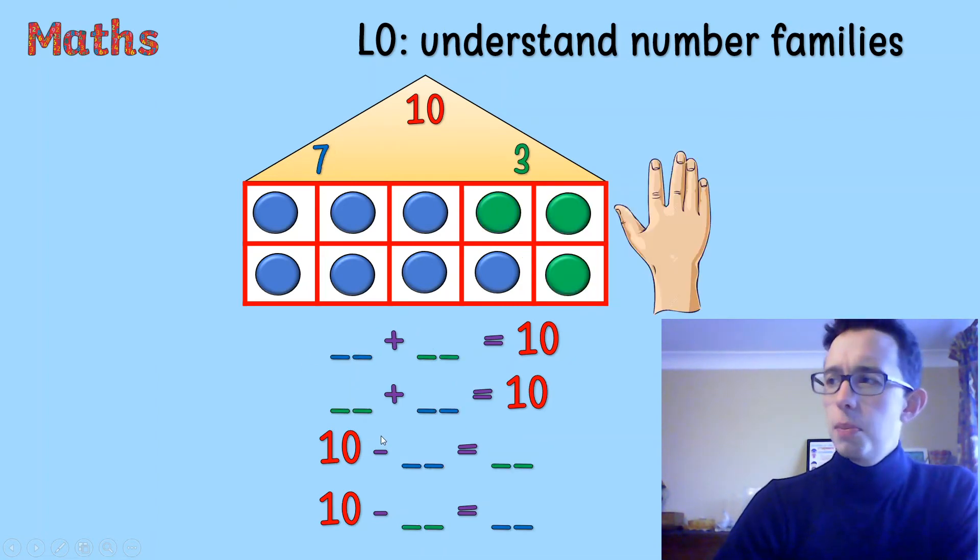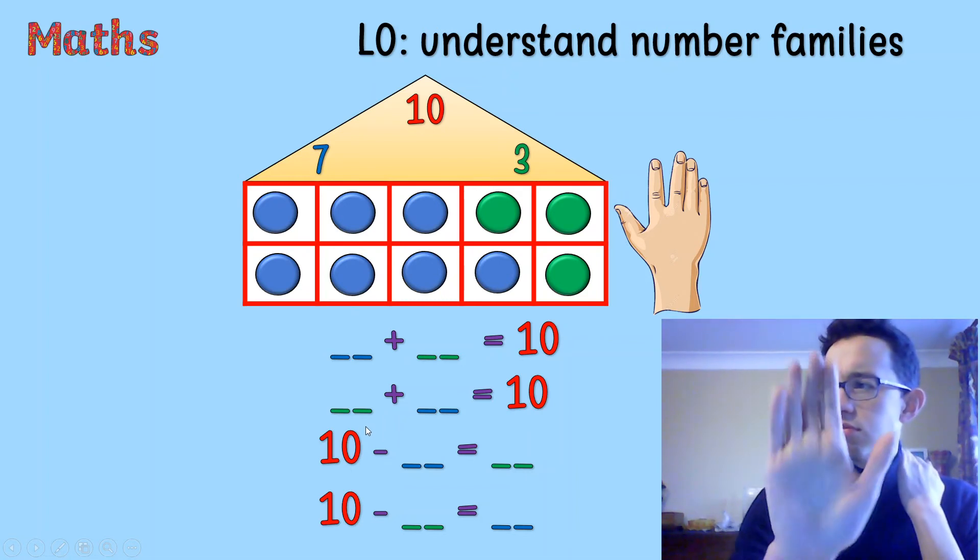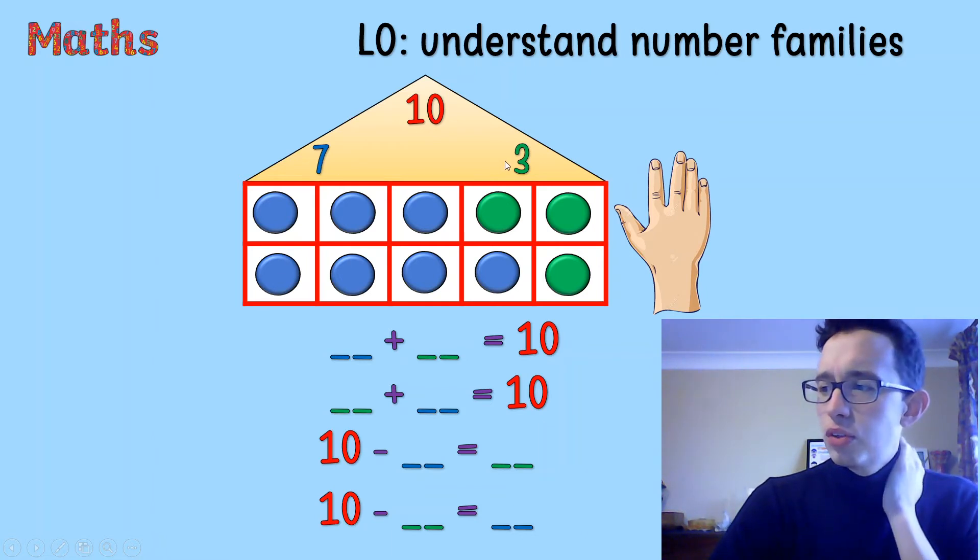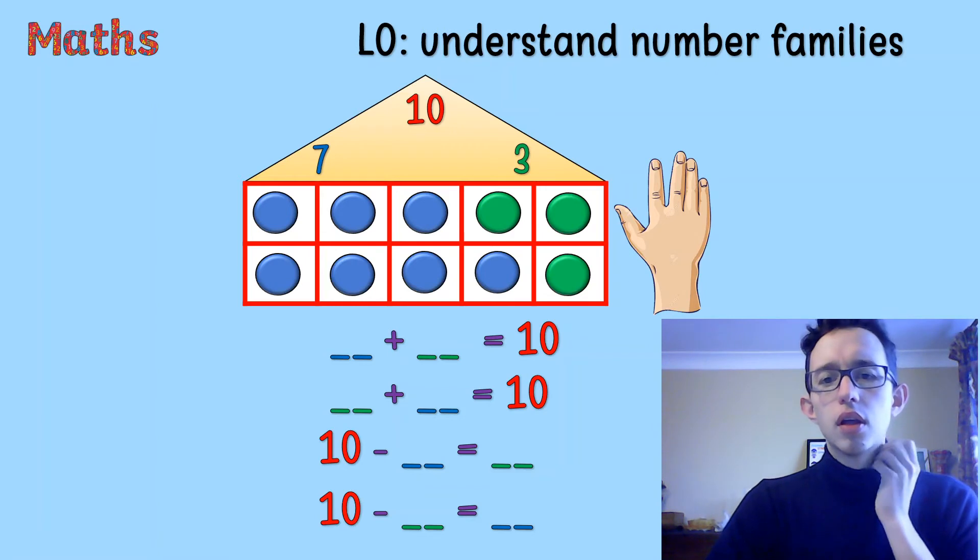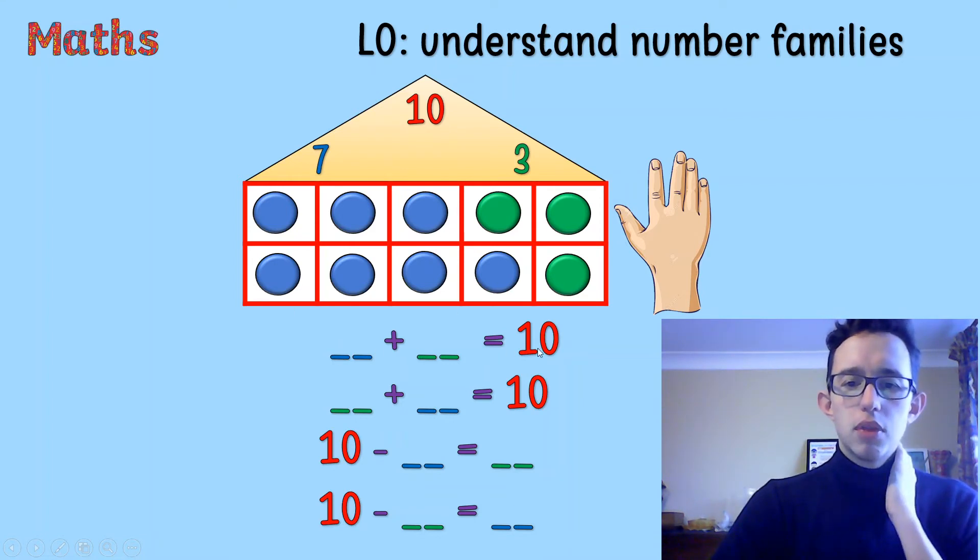So this one, maybe you need to pause the video now and have a go. This one is 10, 7 and 3. Use your number bonds as well to help you. So there's 7 blue ones, 1, 2, 3, 4, 5, 6, 7 and 3 green ones. So we could say something and something. If you're not sure, use these colours to help you. And see if you can work it out.